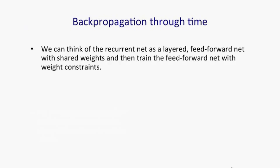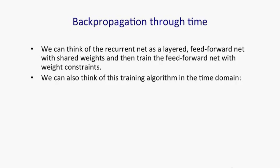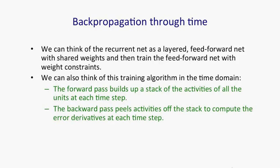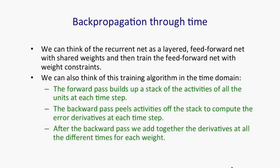The backpropagation through time algorithm is just the name for what happens when you think of a recurrent net as a layered feedforward net with shared weights and train it with backpropagation. We can think of that algorithm in the time domain. The forward pass builds up a stack of activities at each time slice, and the backward pass peels activities off that stack and computes error derivatives at each time step backwards. That's why it's called backpropagation through time. After the backward pass, we add together the derivatives at all the different time steps for each particular weight, and then change all the copies of that weight by the same amount, proportional to the sum or average of all those derivatives.